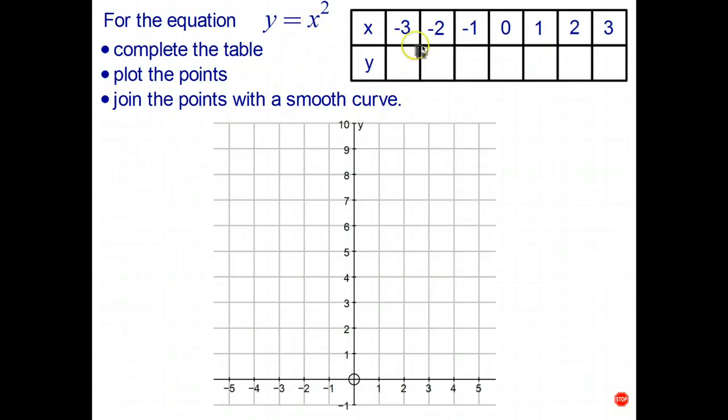Negative 3 squared is positive 9, since a negative times a negative is a positive. So when x is negative 3, y is 9. When x is negative 2, we get negative 2 squared, where negative 2 times negative 2 is positive 4. Negative 1 squared is positive 1, etc. So just to save a bit of time, I'll complete the table fairly quickly. You might want to just stop the video and check those values.